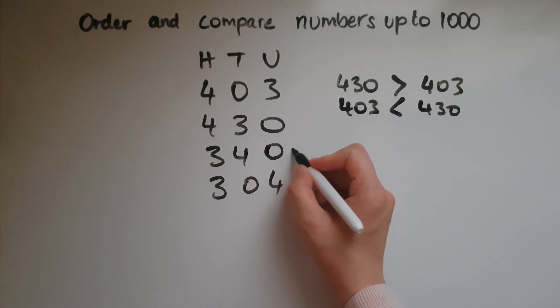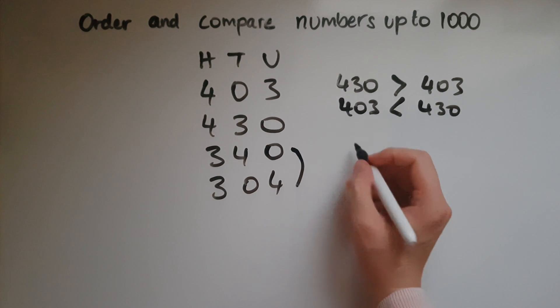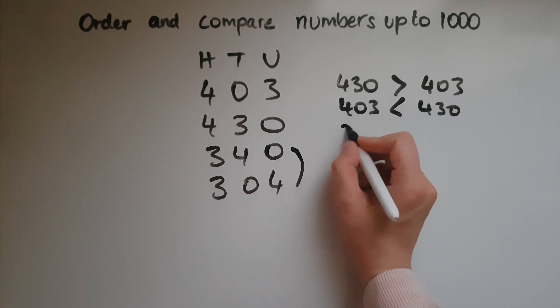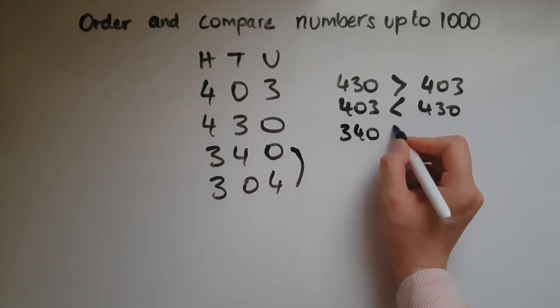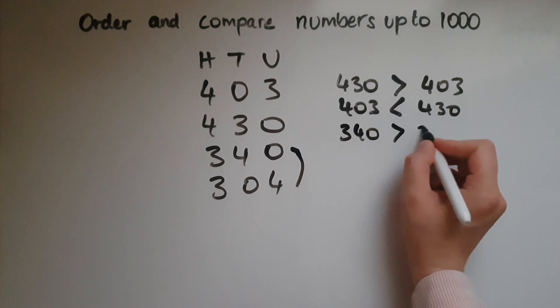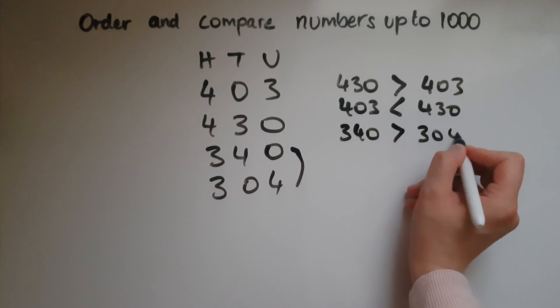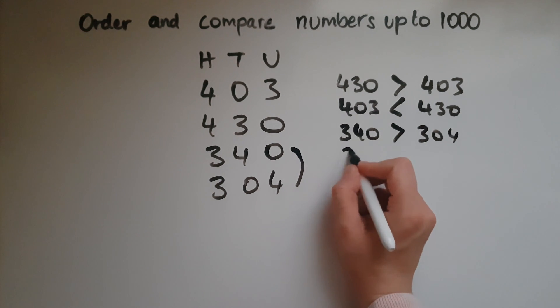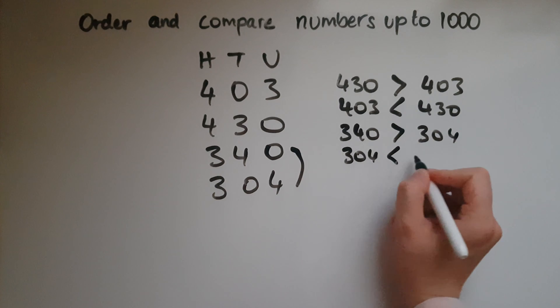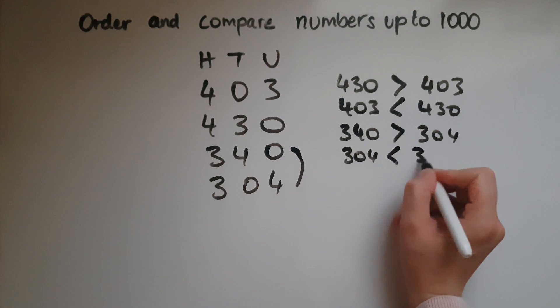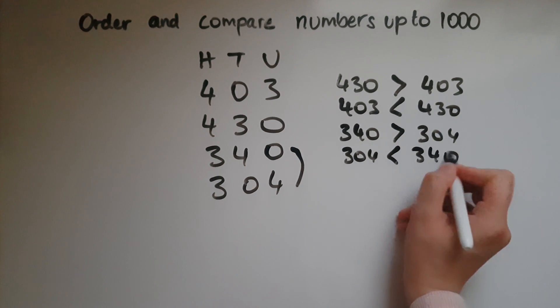Comparing the other two: 340 is greater than 304, whereas 304 is smaller than 340.